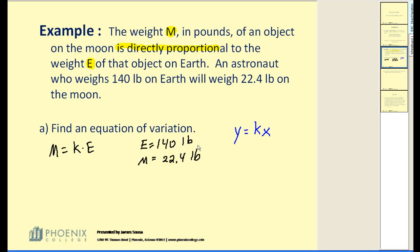So again, when e is 140, m is 22.4. We can use these values in this equation and find our constant of variation. Let's go ahead and do that.